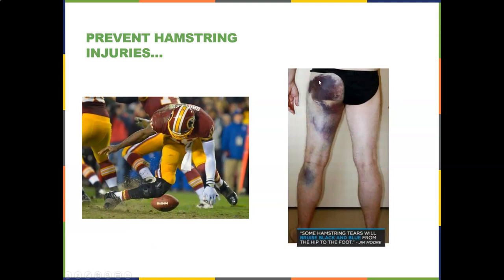Here's an example of hamstring injuries — RG3 with a hamstring tear. Severe hamstring tears can bruise black and blue from the hip all the way to the foot. That's a bruise, not compartment syndrome.